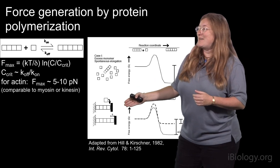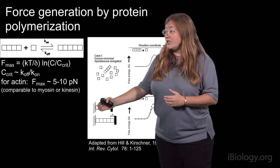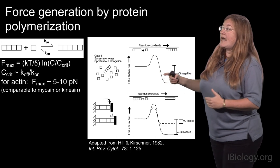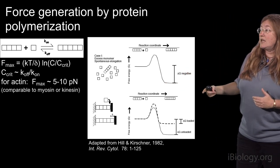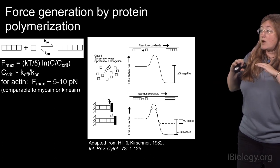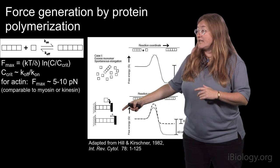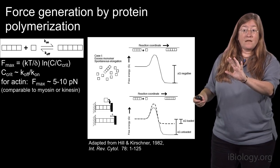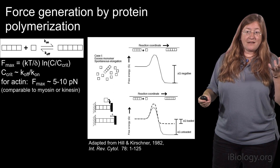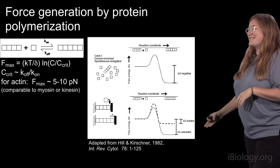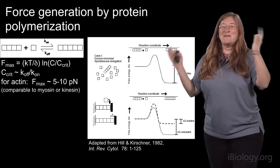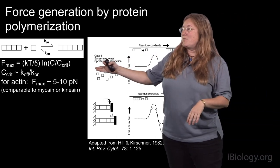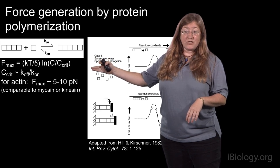If we imagine taking one of those little filaments and putting it between a rigid barrier like a wall on one side and a smaller barrier that can move back and forth on the other side, then as long as the free energy released by the polymerization reaction is greater than or equal to the amount of work it takes to move that little barrier through distance delta, the overall polymerization reaction will still be favored and the barrier will be pushed forward. Using that kind of very fundamental thermodynamic energetic argument, Terrell Hill and Mark Kirshner in 1982 wrote a fabulous 125-page manifesto describing all the different ways that protein polymerization and depolymerization could be used to generate force.